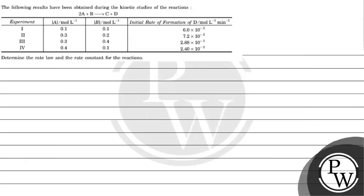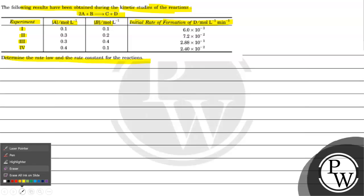Hello guys, let's read this question. The question is: the following results have been obtained during the kinetic studies of the reaction 2A plus B gives C plus D. Experiments 1, 2, 3, 4 — concentrations of A and B, and the initial rate of formation of D are given. We have to determine the rate law and rate constant for the reaction.